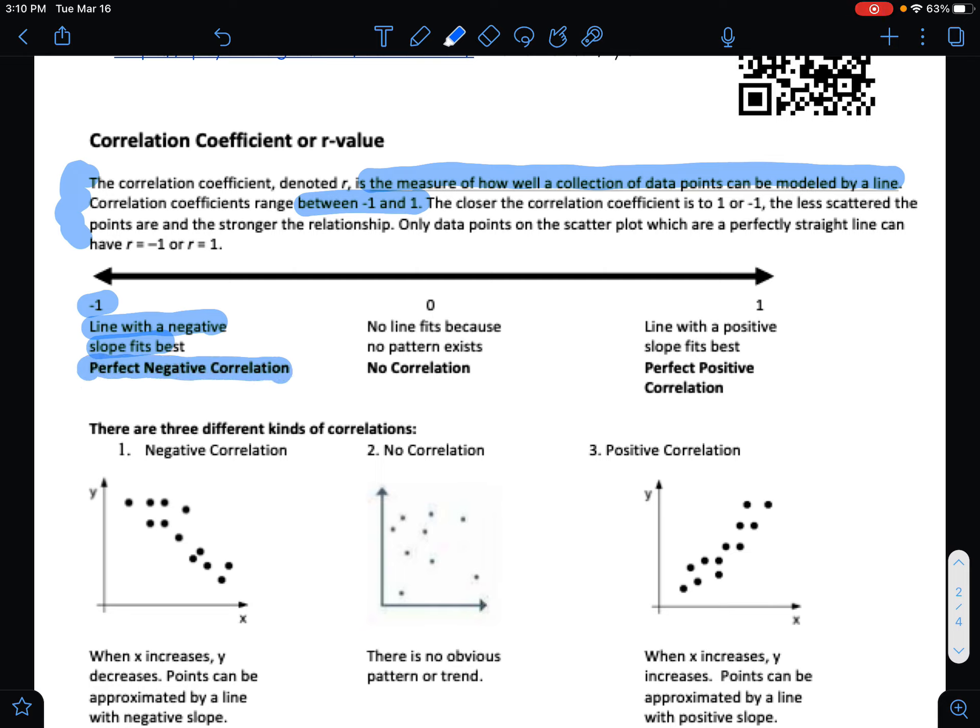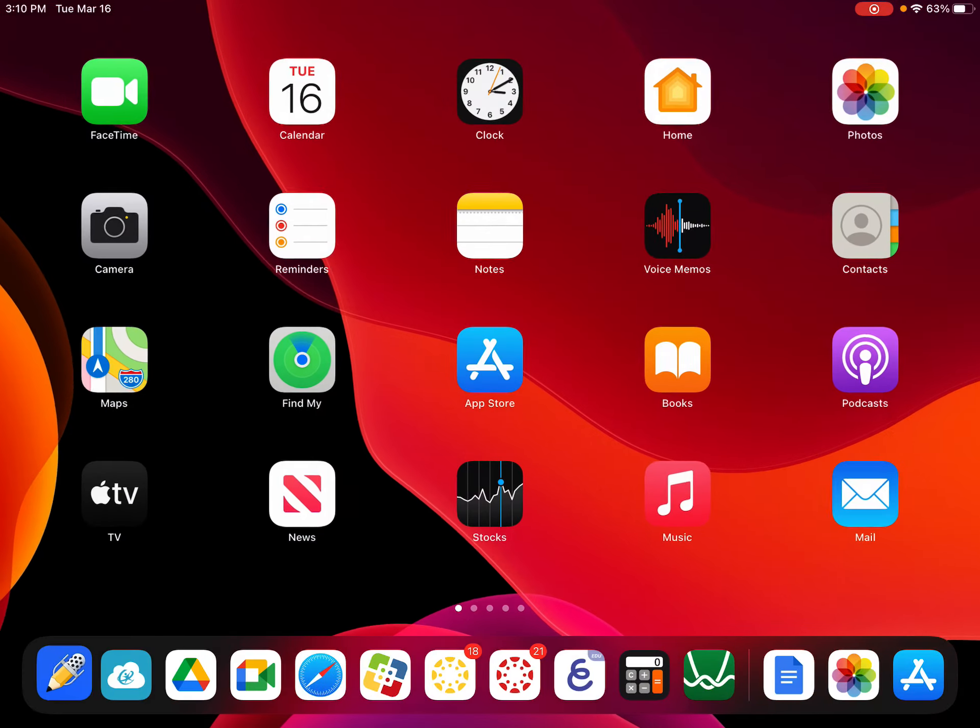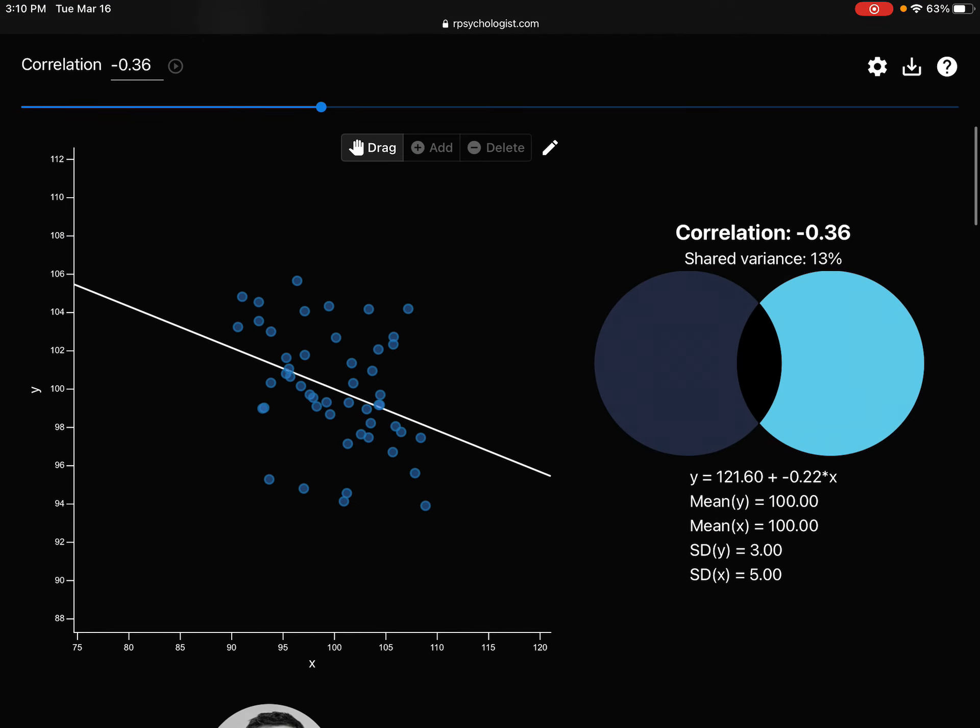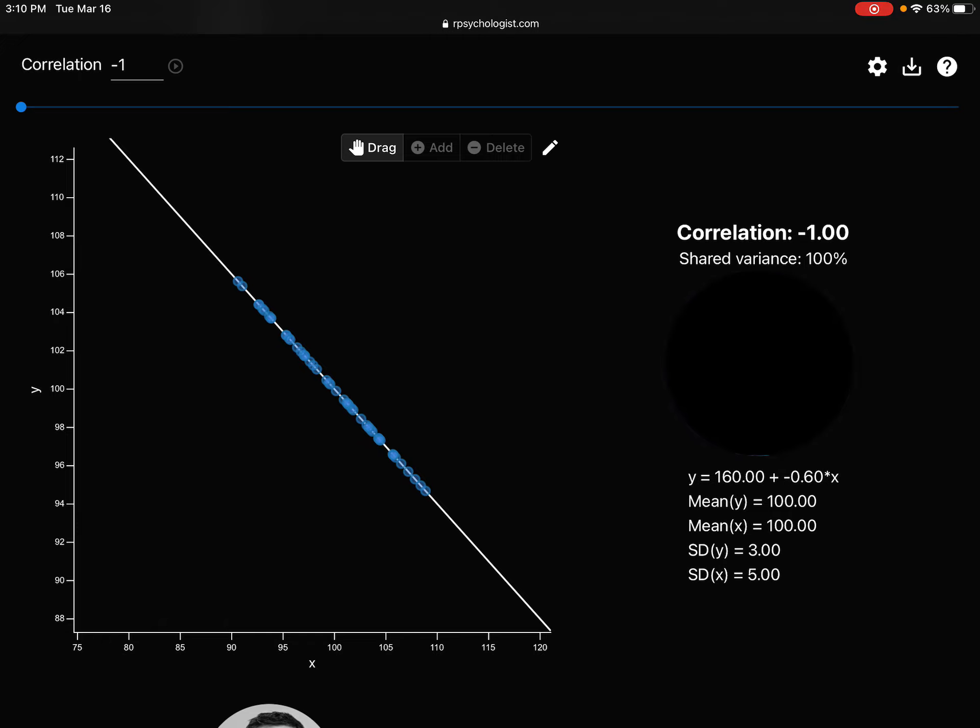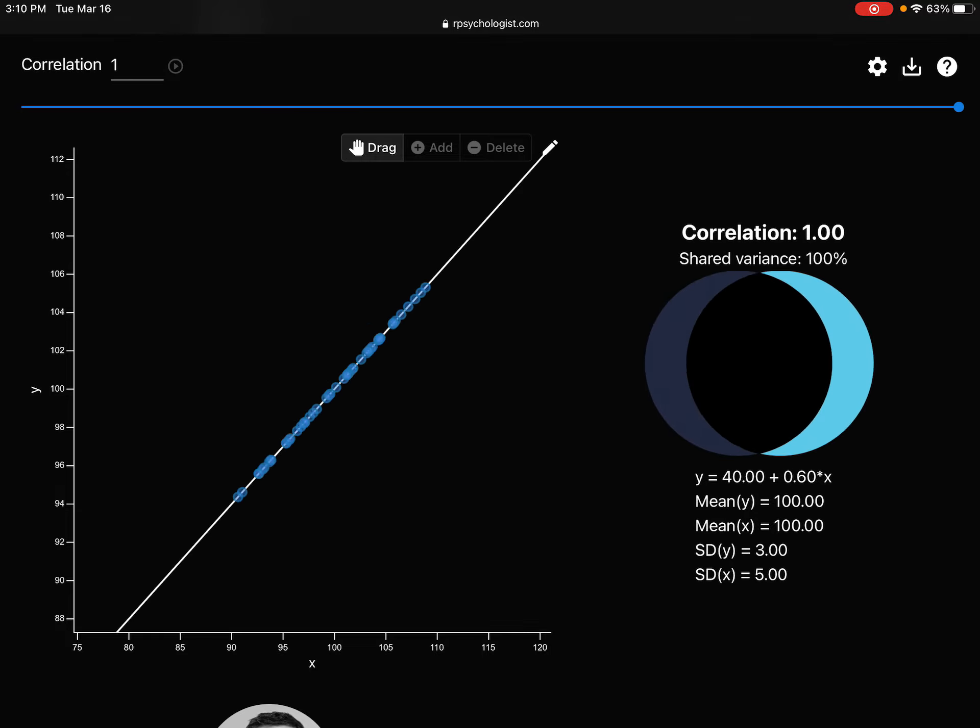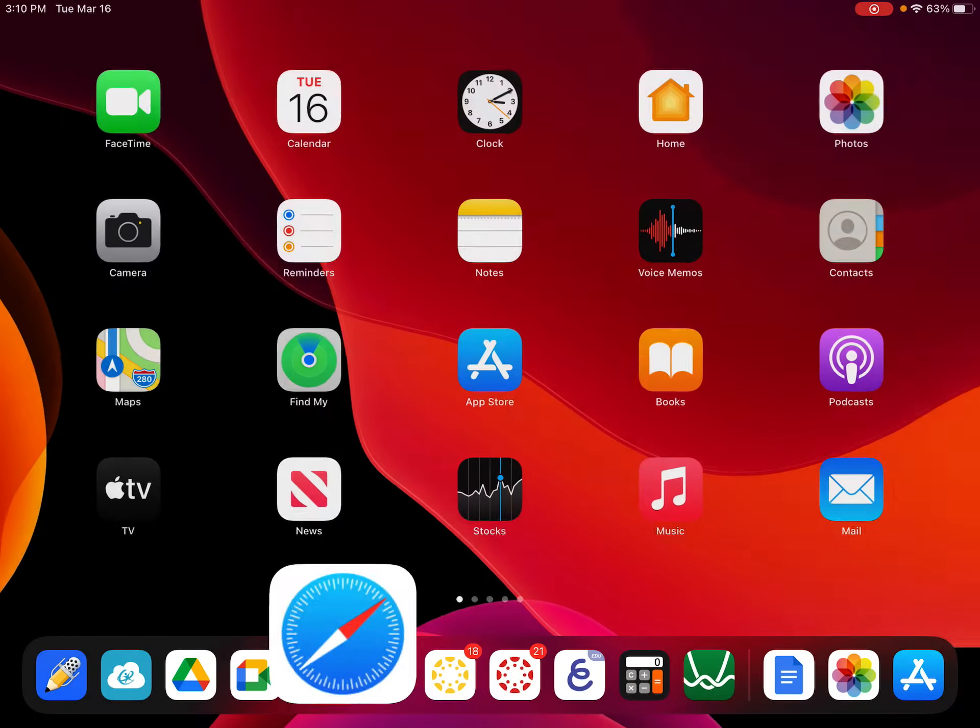If we were looking at the points over here, the perfect negative correlation is when the points are lined up on the line and the line is sloping in a negative direction. So it's going down from left to right.